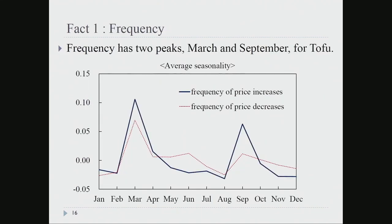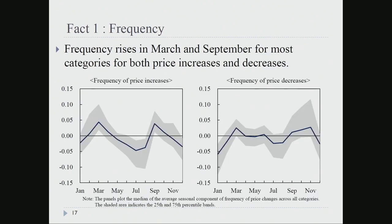Starting with the first fact: looking at the seasonal cycles of frequency of price changes for tofu, for both price increases and price decreases, you can see that the frequency increases in March and also in September for both directions. Looking at the distribution of categories for all items — price increases on the left and price decreases on the right — you also see similar patterns: two peaks in March and September for both price increases and price decreases.